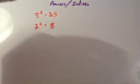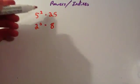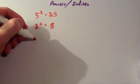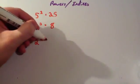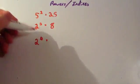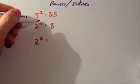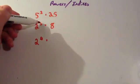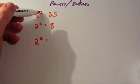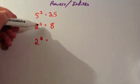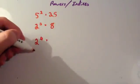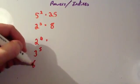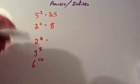Sometimes you get higher numbers — you don't just always get powers of 2s and 3s. Sometimes you get powers such as 2 to the power of 4, and that's how you say it. Squared and cubed have special names — you could also call them 5 to the power of 2 and 2 to the power of 3. This would be 3 to the power of 5, or 6 to the power of 10.